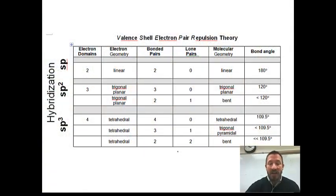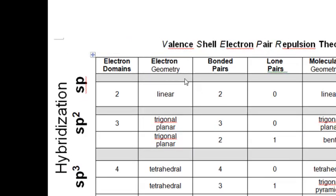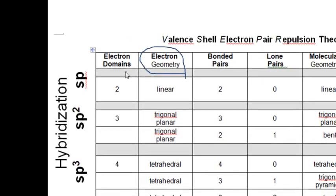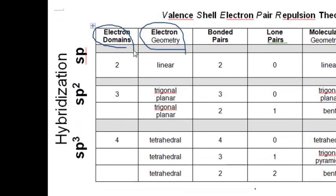First thing, I've made a couple changes to the chart that I gave you on the back of your calendar. If you notice, what I did is I included a column that says electron geometry. I also put electron domains here. Notice that SP applies to anything that is linear and has two electron domains. So basically if you count two electron domains, it's SP.